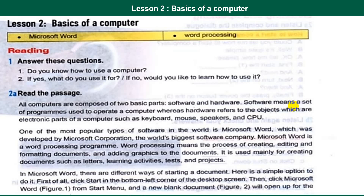Now the second paragraph: one of the most popular types of software in the world is Microsoft Word, which was developed by Microsoft Corporation, the biggest software company. Microsoft Word is a word processing program. Word processing means the process of creating, editing, and formatting documents and adding graphics. It is used mainly for creating documents such as lectures, learning activities, tasks, and projects.